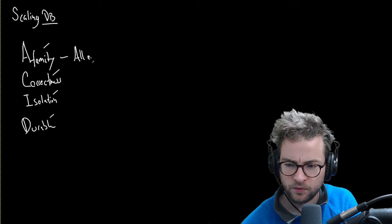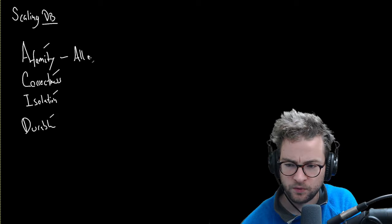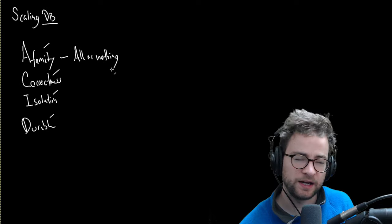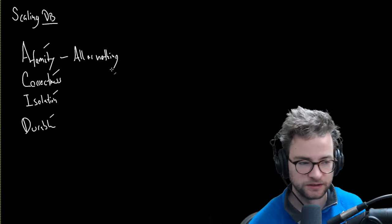Atomicity is really all or nothing. All of the statements in a query, in a write, should succeed. But if one part of it fails, then none of it should go through. That way we don't leave the database system in a state that is partial or incomplete.